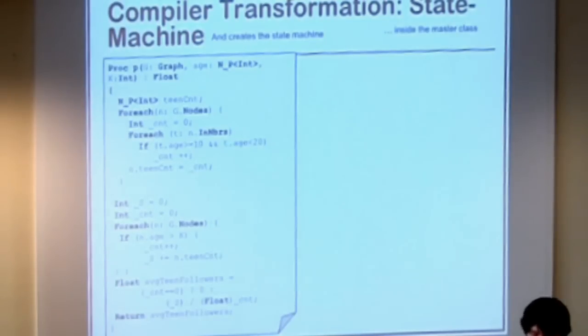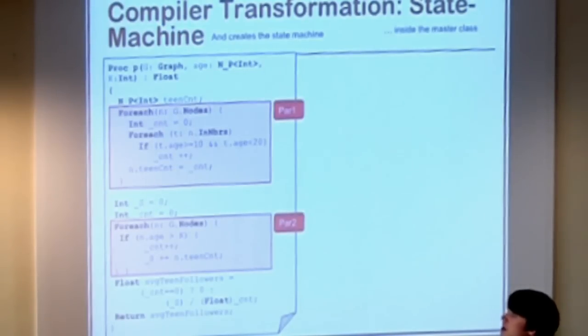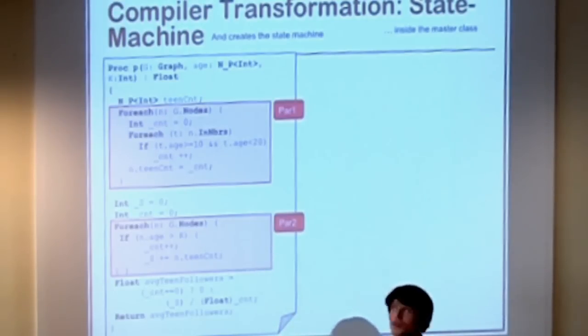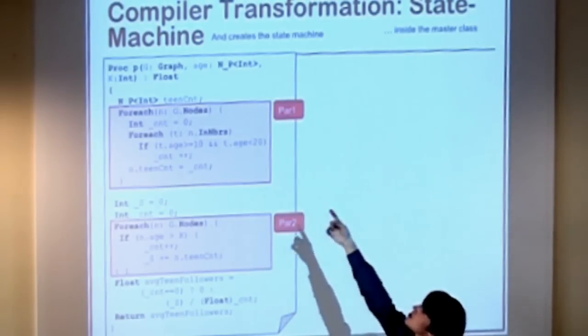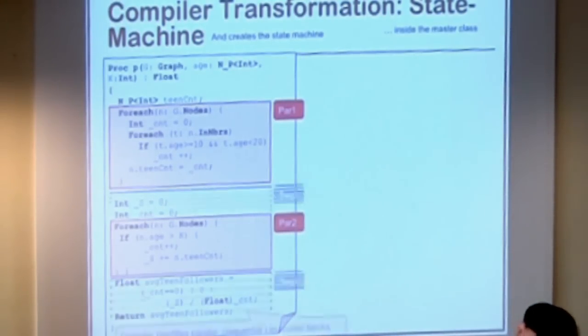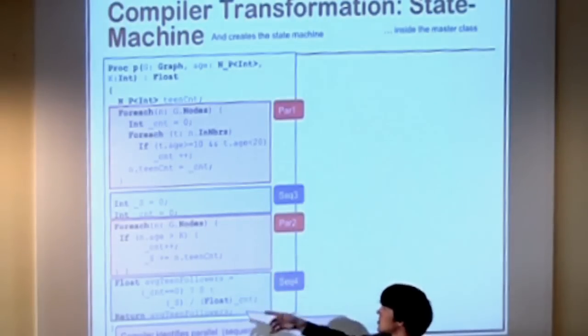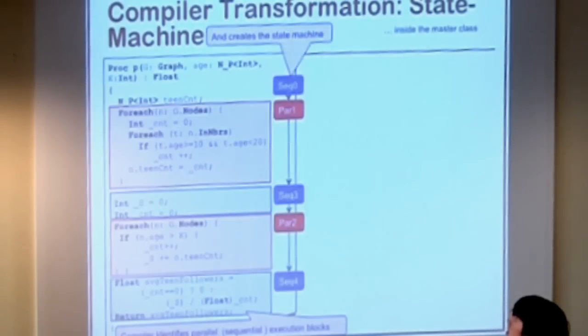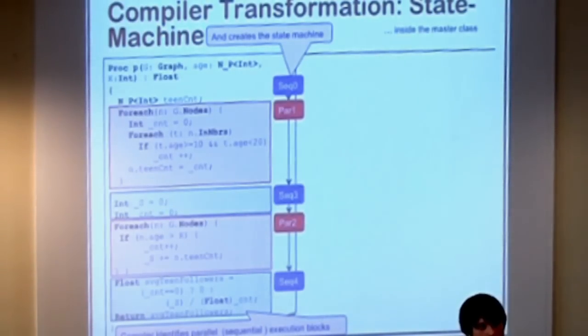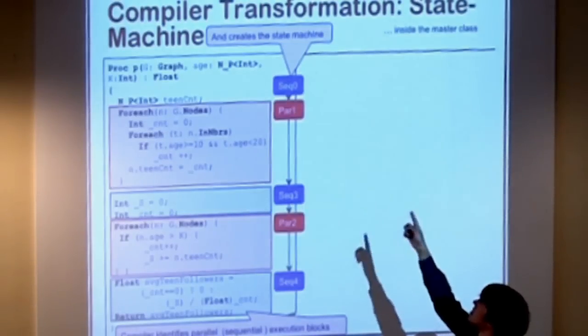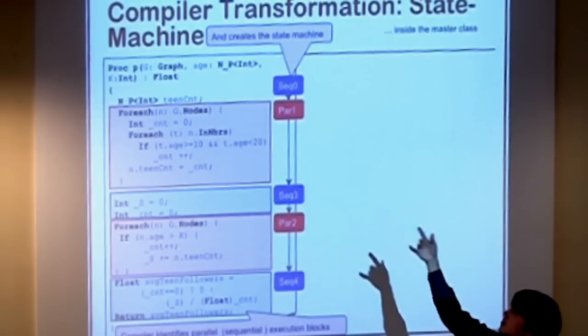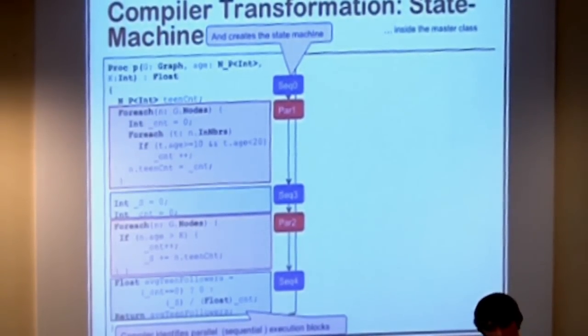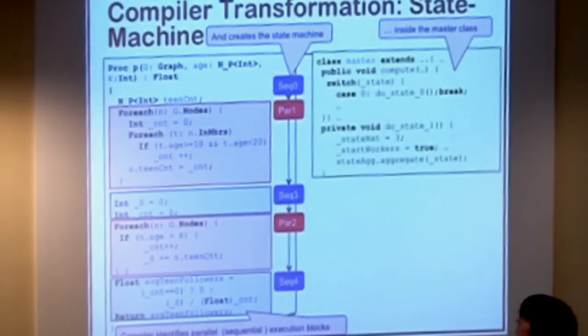So we had the global variables. What the compiler does is it puts those global variables into the master class. And it initializes them when necessary. And it does the same for the vertex property. So you have the NP variables there, which are variables that are bound to node properties. So this means that every node or every vertex in the graph has an integer called age and an integer called teencount. And it puts those into the vertex class. So now we have two classes with the right vertices and the right number of copies of the variables. And then we have to decide how the execution will happen.